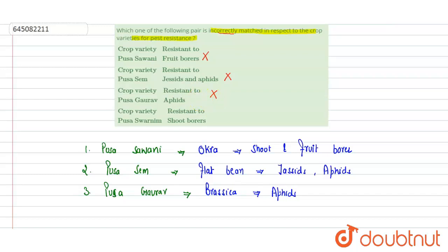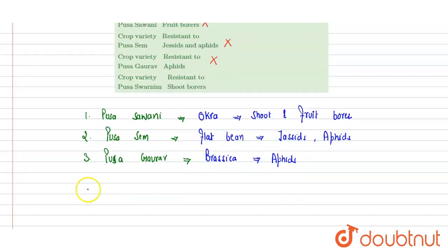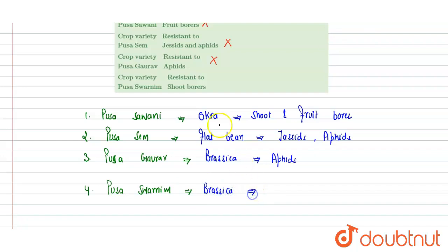The last option is Pusa Swarnim, and it is the incorrect match — making it our correct answer. Pusa Swarnim is also a variety of Brassica, but it is not a pest-resistant variety. It is a disease-resistant variety, specifically resistant to white rust disease. So option D is correct.